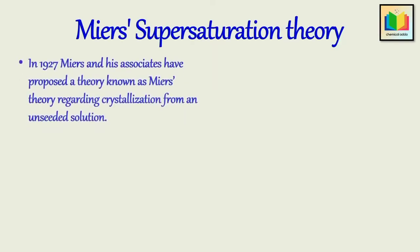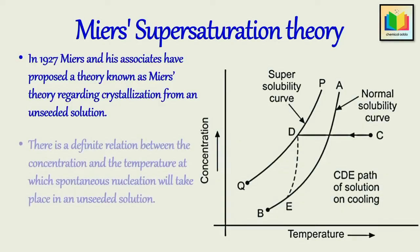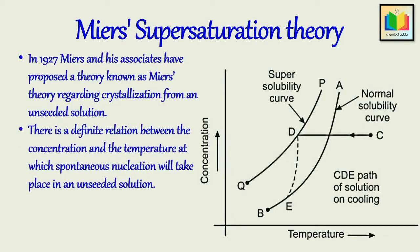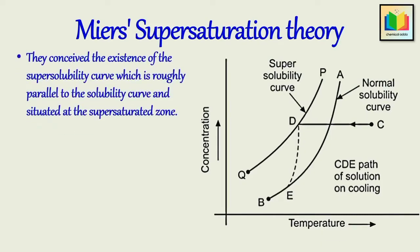In 1927, Miers and his associates proposed a theory known as Miers' theory regarding crystallization from an unseeded solution. According to this theory, there is a definite relation between the concentration and the temperature at which spontaneous nucleation will take place in an unseeded solution.